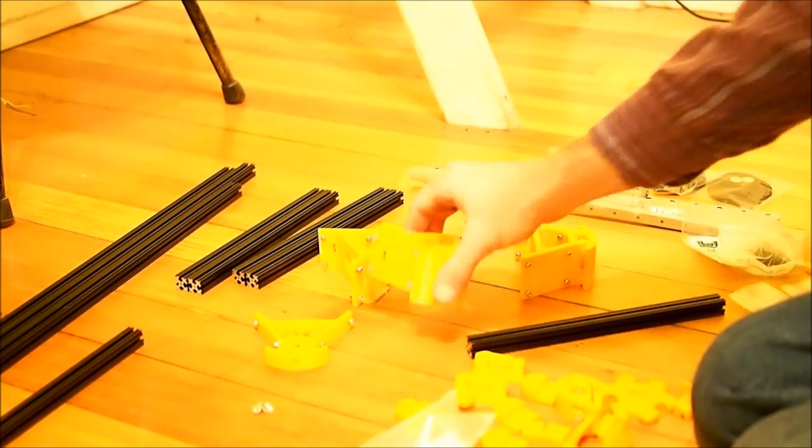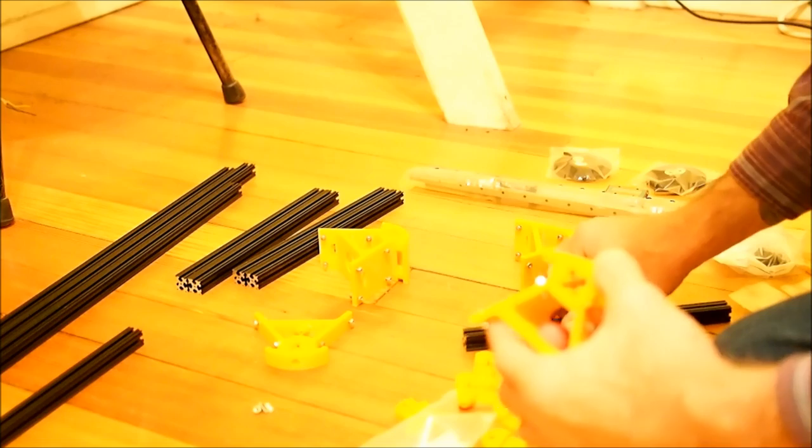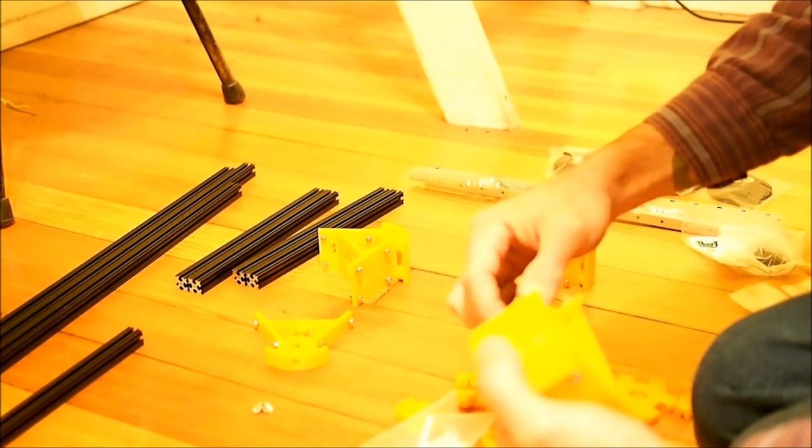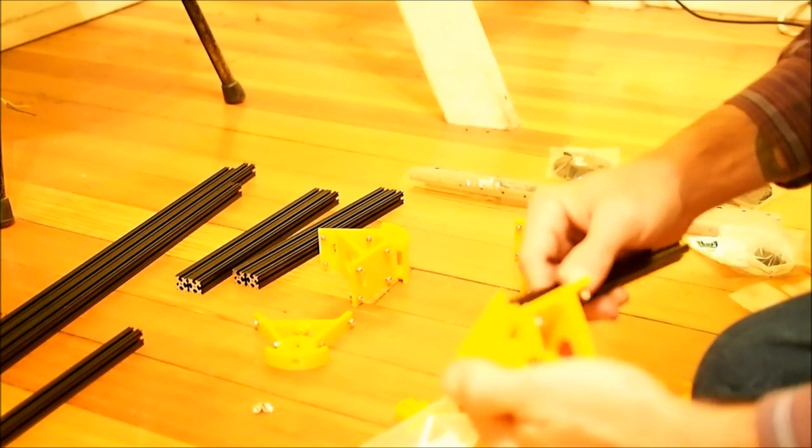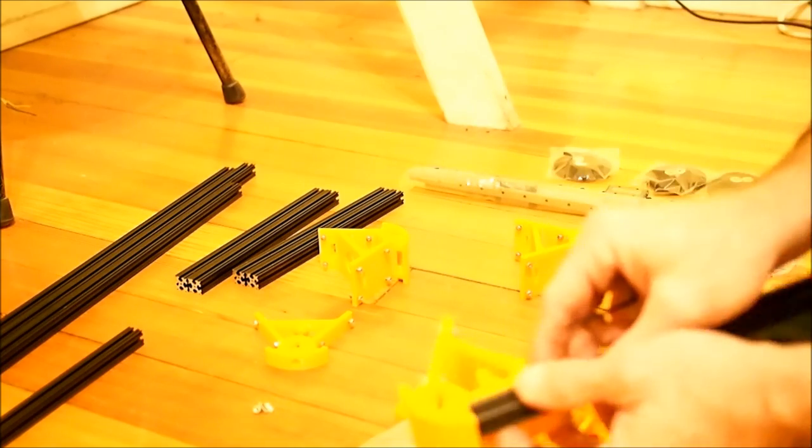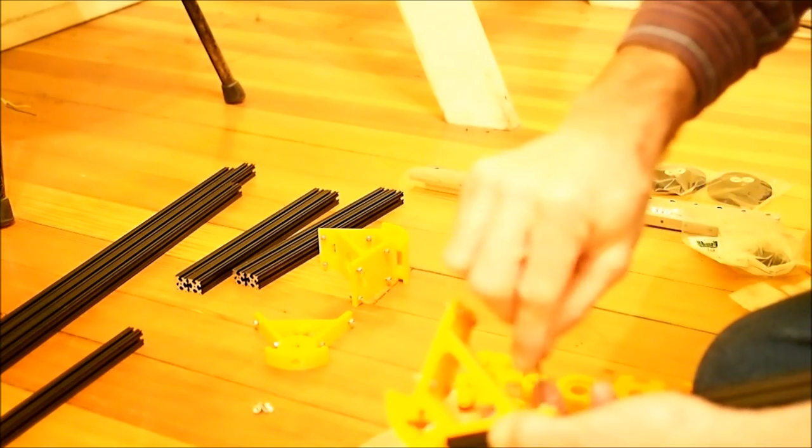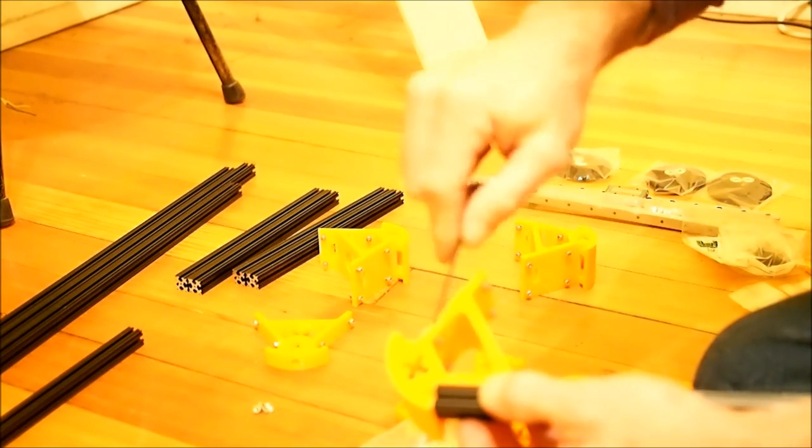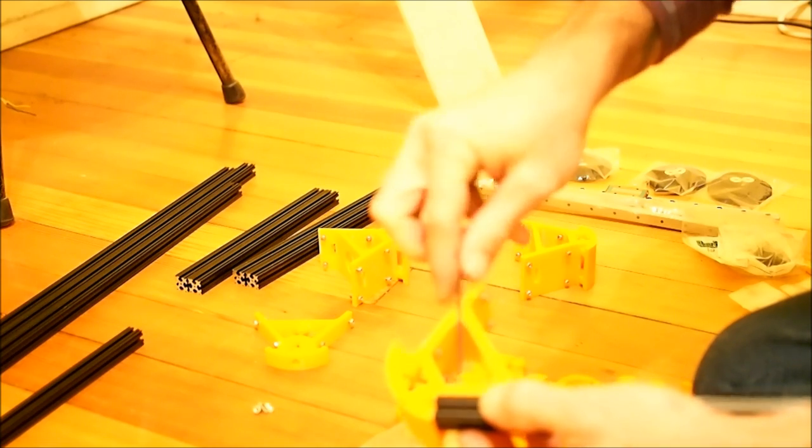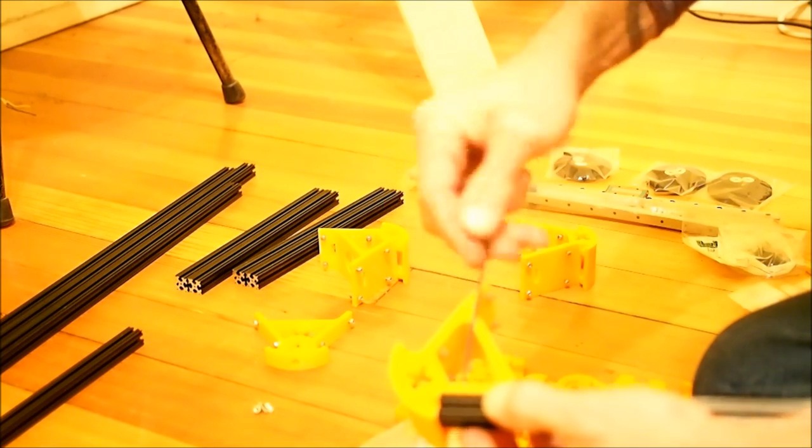Okay, once you've got all these nuts and bolts started onto these plastic pieces, you can start putting the rail on there. As you put each piece of rail on, it's worth tightening down enough to keep from falling off.